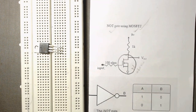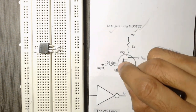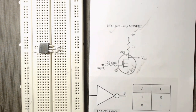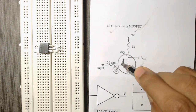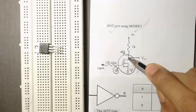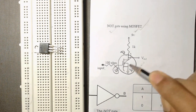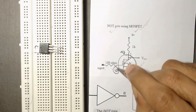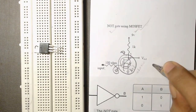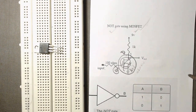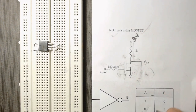Here is an N-channel MOSFET. This side is drain, this is gate, and this terminal is source. We know that when there is no gate voltage, the MOSFET will not allow current to flow from drain to source. That's why if there is no gate voltage, this MOSFET will act as an open switch. In this circuit we have used a 9-volt battery.